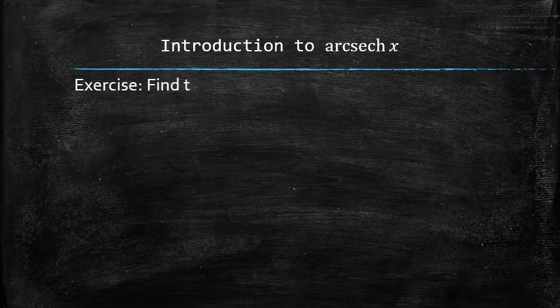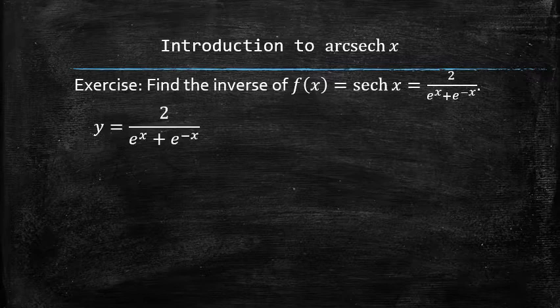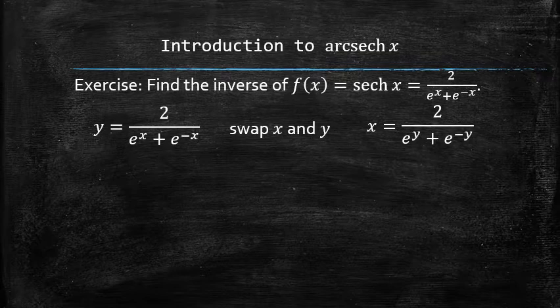Let's find the equation of the inverse of the hyperbolic secant of x function. To find the inverse, we first swap the x and y in the equation and now the goal is to isolate the y variable.